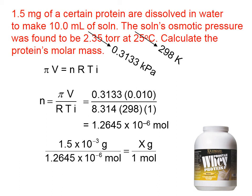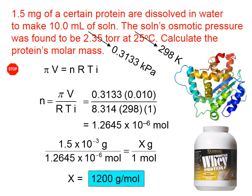Notice in this expression at the bottom, the numerator here, 1.5 times 10 to the negative third grams. That is, if you look in the very upper left corner of the screen, that was the first bit of information that was given, 1.5 milligrams. Milli is associated with 10 to the negative third. And, if you solve that proportion, the molar mass of this protein is about 1,200 grams per mole.